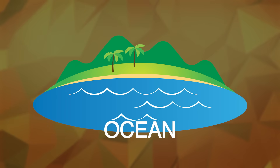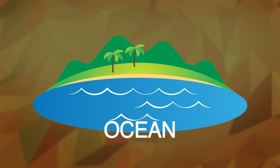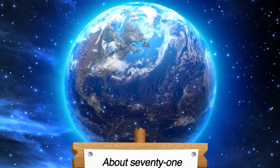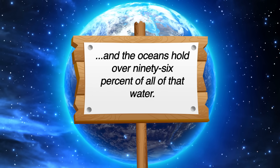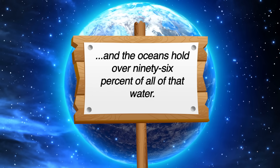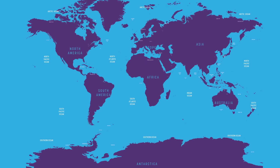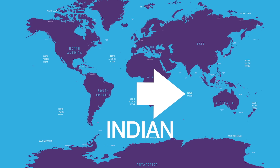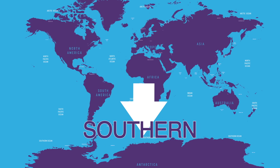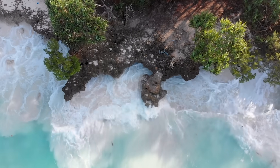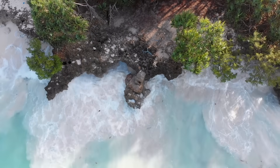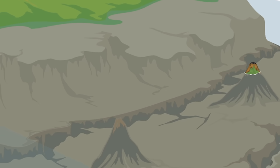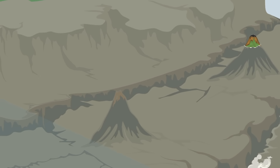Oceans are the largest bodies of water in the world. About 71% of the Earth's surface is covered in water, and the oceans hold over 96% of all that water. The world has five main oceans: the Pacific, Atlantic, Indian, Arctic, and the Southern Ocean. These oceans make big waves that land at the coast of each of the seven continents. Some landforms, like mountains and volcanoes, can be found at the bottom of the ocean.